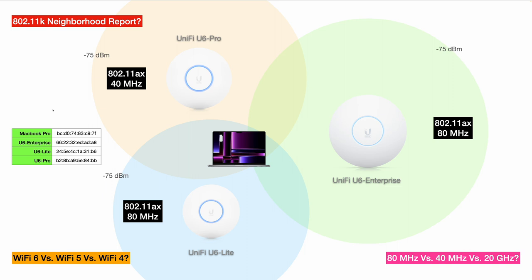In the second part of this video, to make things more interesting, I will introduce another access point. The new one will have almost the same signal strength but use a different channel width — let's see whether that has any impact on roaming. We will also discuss the neighborhood report, different Wi-Fi standards, and whether they have anything to do with the roaming results.